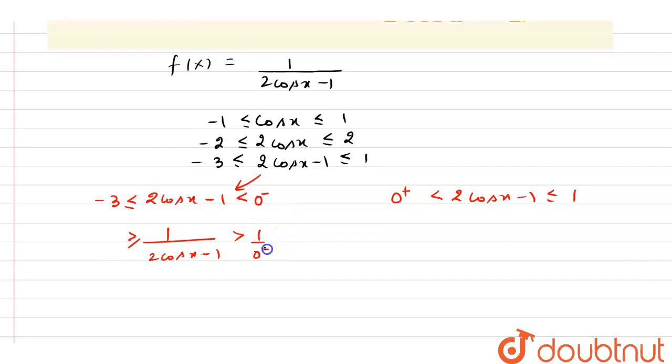So I have 0 negative and minus 1 by 3. Similarly for this side, 1 by 2 cos x minus 1 will be 1 by 0 positive to 1 by 1.